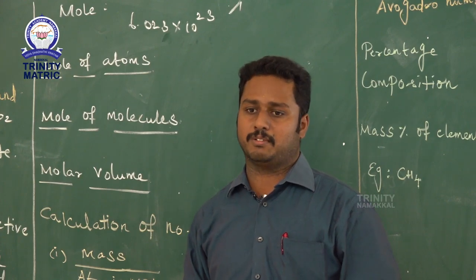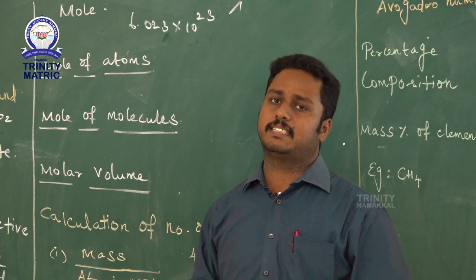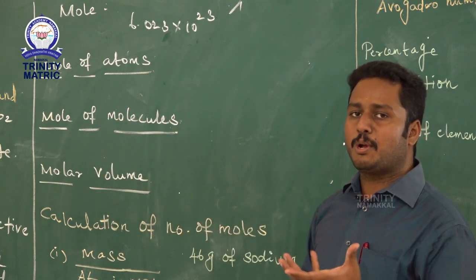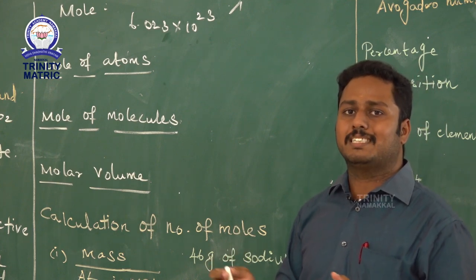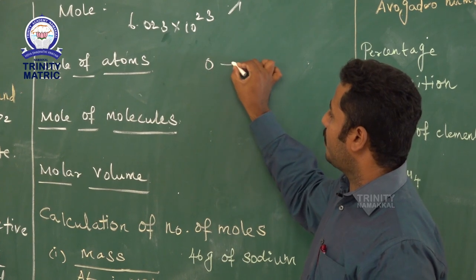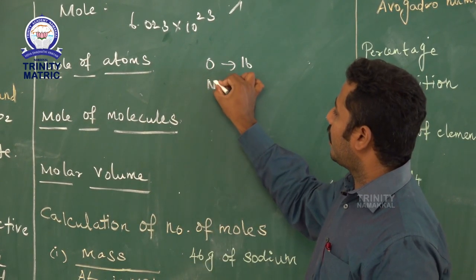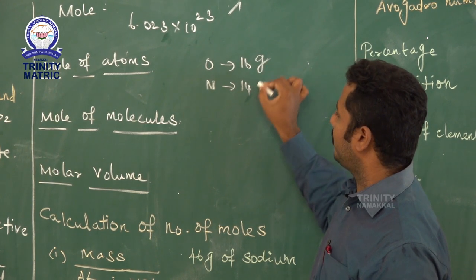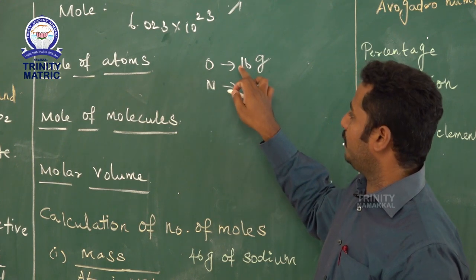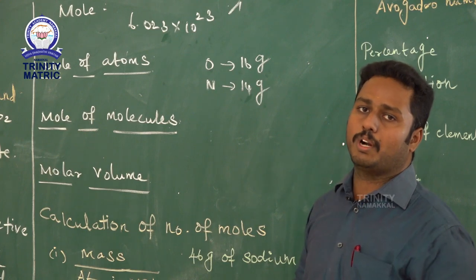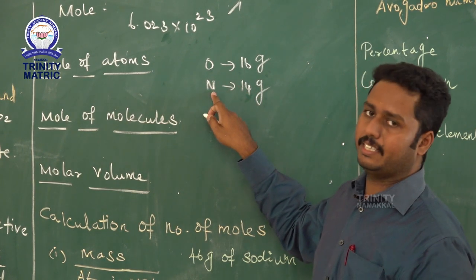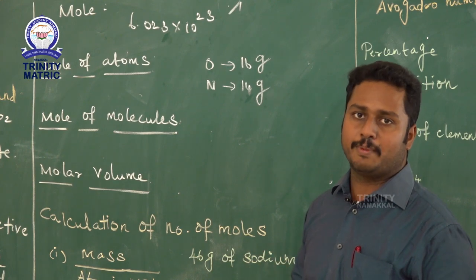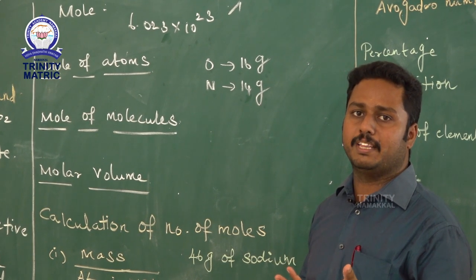Each element has a particular atomic mass. Carbon's atomic mass is 12, nitrogen's is 14, and oxygen's is 16. If you express the atomic mass in grams, it is called gram atomic mass. So 16 grams of oxygen equals 1 mole, and 14 grams of nitrogen equals 1 mole. The gram atomic mass of a substance is equal to 1 mole. Similarly, for molecules, the molecular mass expressed in grams is called gram molecular mass, and that weight equals 1 mole.